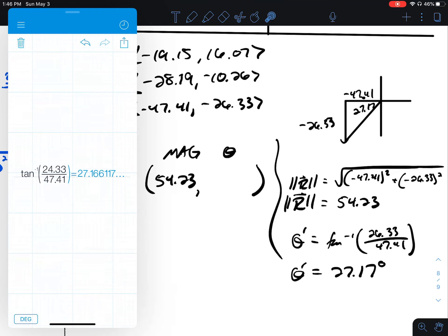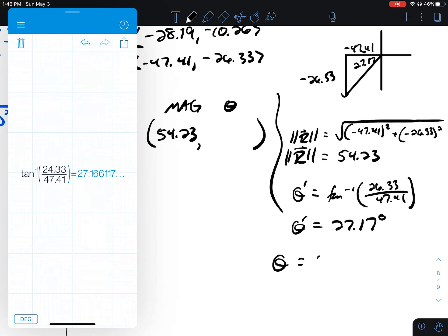So if I want to figure out what this angle is, I'm going to add that to 180. Theta is going to be 180 plus 27.17. That's 207.17 degrees.